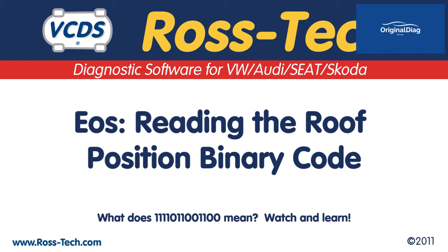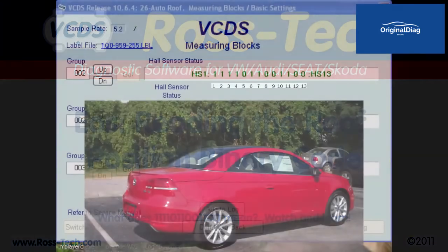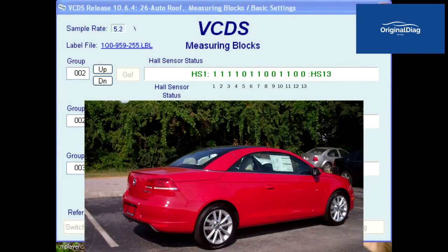there will only be 12 bits of data. Starting with the 2009 year model EOS, a new sensor, the G672, was added, thus a 13th bit is found. Let's watch live data as the top cycles open, then closed.